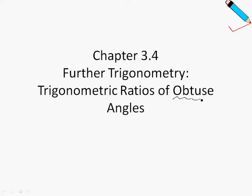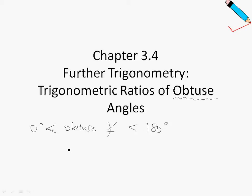Let me explain what the word obtuse means. Any obtuse angle is between 0 and 180 degrees. The other term you need to be familiar with is an acute angle — an acute angle is any angle that is less than 90 degrees.